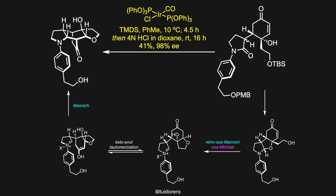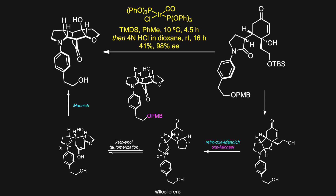This led to the deprotection of the TBS group and triggered the retro-oxamanic–oxamical–manic cascade in a single step. Concurrent PMB deprotection gave Incargranin A in 41% yield, along with the PMB-protected product in 18% yield, which could be readily deprotected using trifluoroacetic acid. When each diastereomer was independently subjected to the reductive cyclization conditions, the depicted product was isolated as the major product, highlighting that the reductive cyclization might proceed with epimerization through the corresponding amide intermediate.